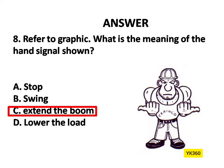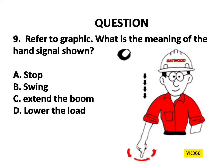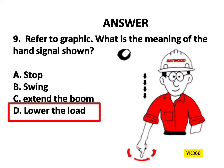Question Number 9. Refer to graphic — what is the meaning of the hand signal shown? Options are: A. Stop, B. Swing, C. Extend the boom, D. Lower the load. The answer is Option D: Lower the load.